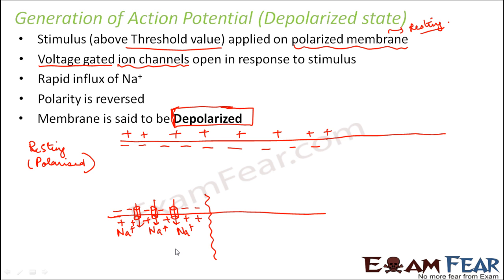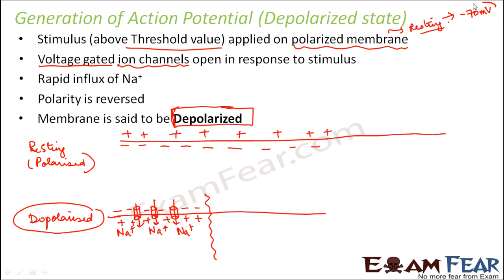This is how the action potential gets generated. The potential difference between the outer and inner membrane is the action potential, and it will be different from the resting membrane potential. The resting membrane potential is approximately minus 70 millivolts. When depolarized, a lot of positive charge comes inside, so this value increases — it moves up towards the positive side.